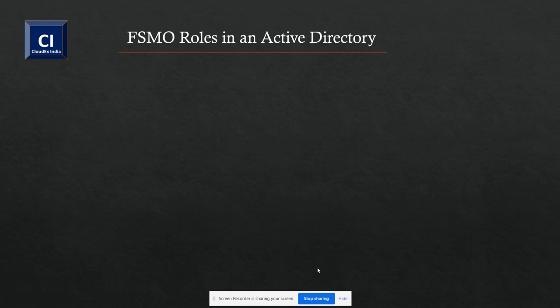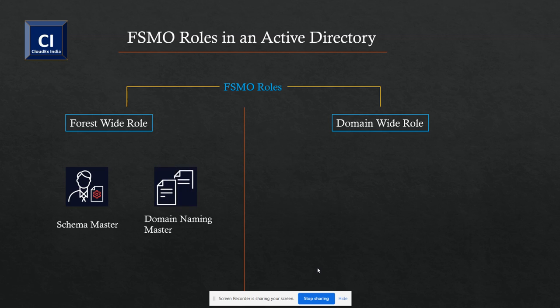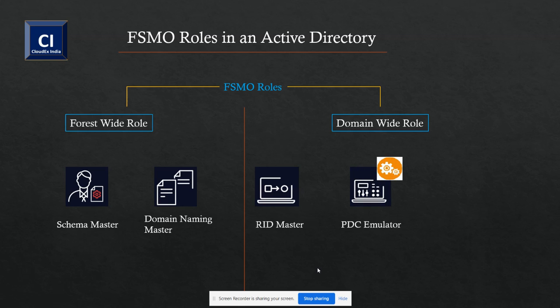FSMR rules in Active Directory play amazing roles and help to prevent conflict. There are five types of rules divided into two parts: one is forest-wide rules and the other is domain-wide rules. Under forest-wide rules, there are two types: schema master and domain naming master. And in domain-wide rules, there are three: RID master, PDC emulator, and infrastructure master.